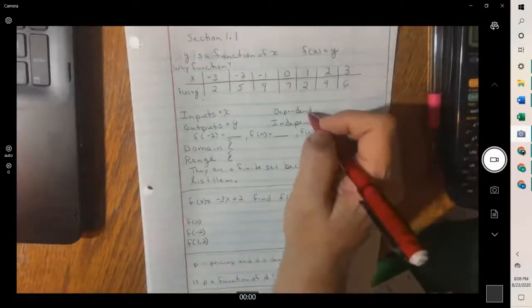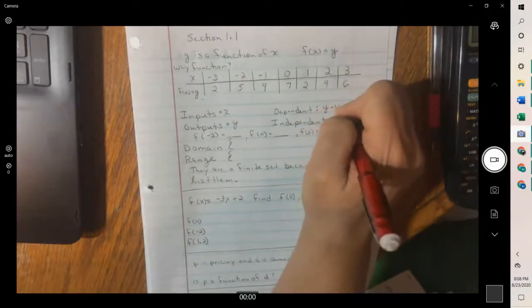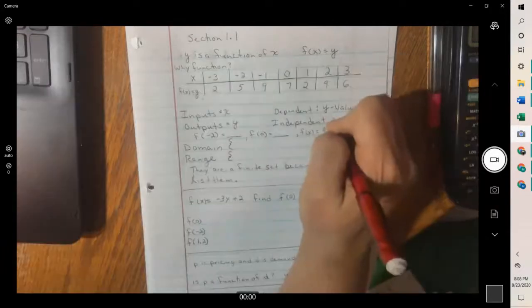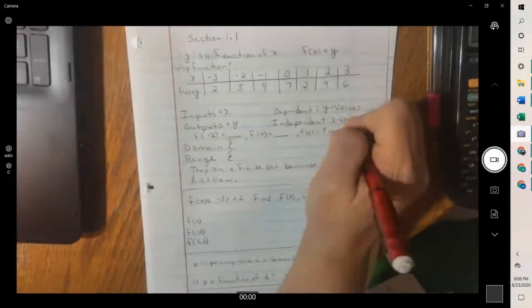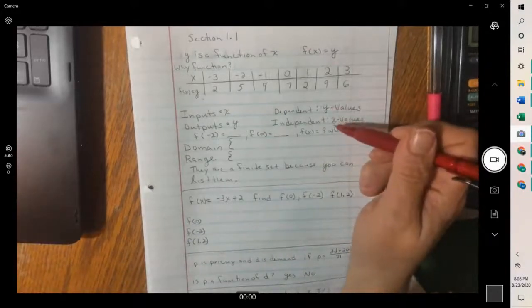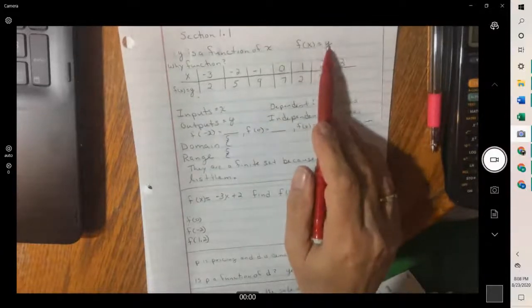The dependent variable is your y values. And the independent is the x values. One way of remembering is y depends on what x is. Because we plug it into the x, because we plug it into the equation to get y.